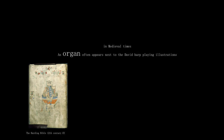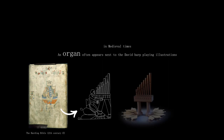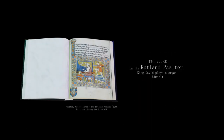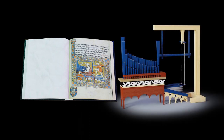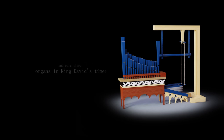In medieval times, an organ often appears next to the David harp-playing illustrations. In the 13th century CE, in the Rutland Psalter, King David plays an organ himself. But wasn't it the harp that David played, according to the Bible? And were there organs in King David's time?